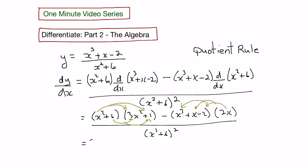So we would get here 3x to the 4th plus x squared plus 18x squared plus 6 minus, and I'll just put that in parenthesis here, 2x to the 4th plus 2x squared minus 4x. And again we'll just leave that all over x squared plus 6 squared.